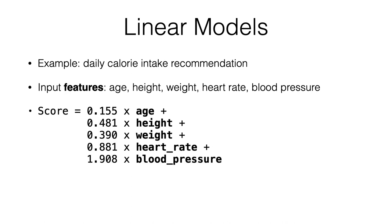You can put in other information so this app will hopefully give you a number better suited for your health. A linear model for this looks like an equation — this is some math, but it's relatively simple. There are numbers like 0.115 multiplied by the age value, so age is a variable. That number could be 15 for a teenager or 55 for a middle-aged person.